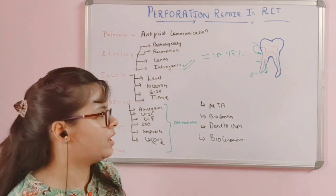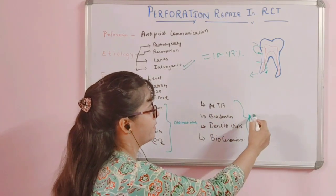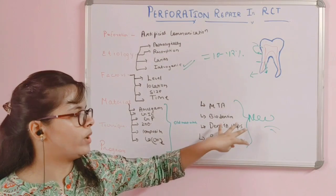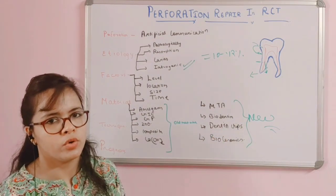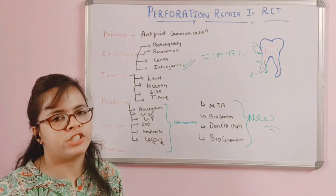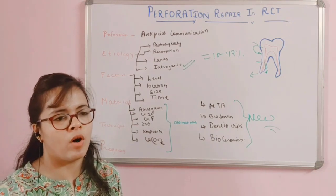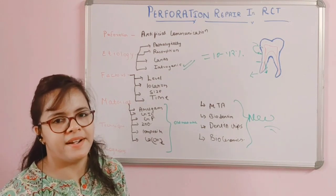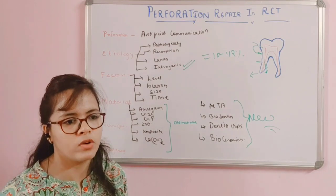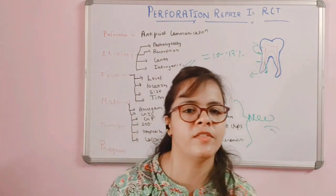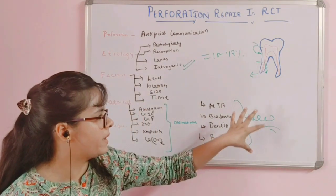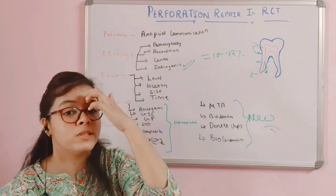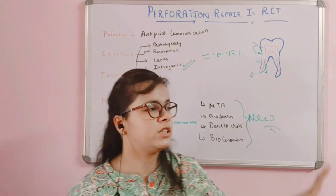The latest materials available to us are biodentine, MTA, dentine chips, and bioceramic. Dentine chips are interesting — when you are doing biomechanical preparation, cleaning and shaping of the canal, you get dentine debris. You take that dentine chip, make it into a powder, mix it with distilled water, and it can be used to repair the perforation. The third newer option is bioceramic.